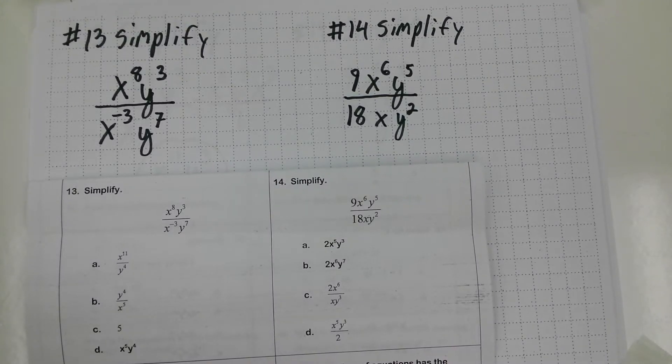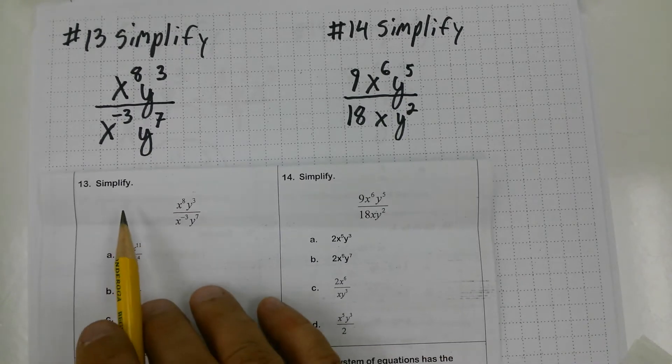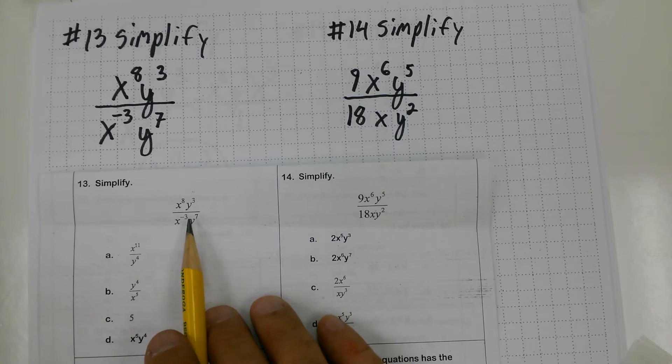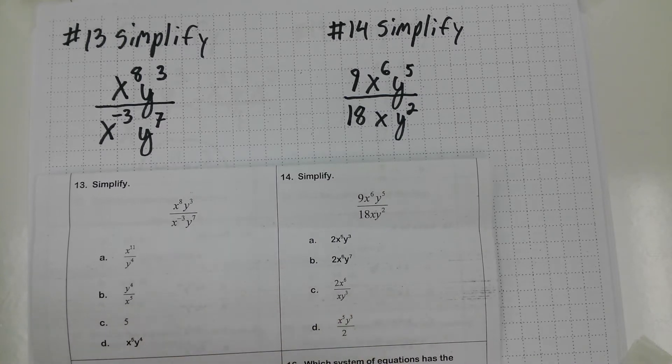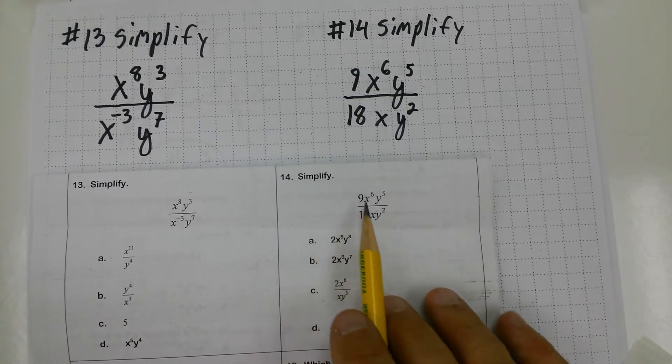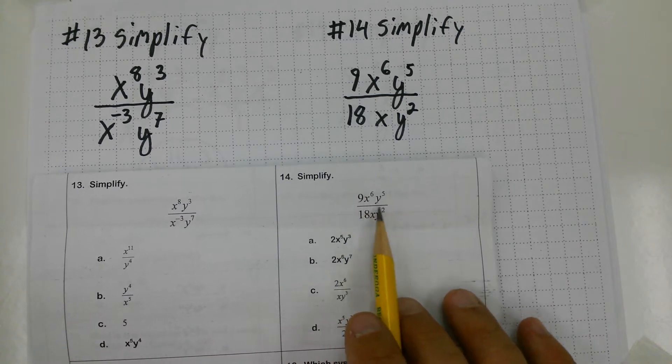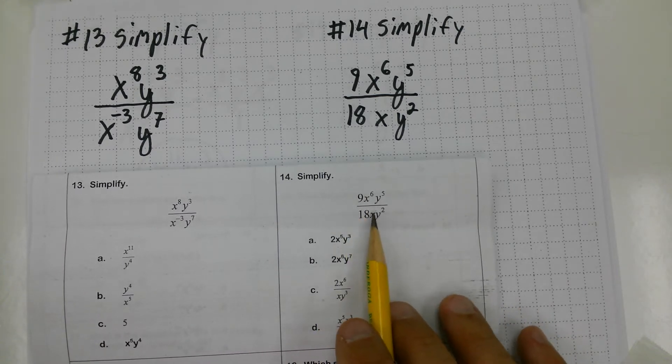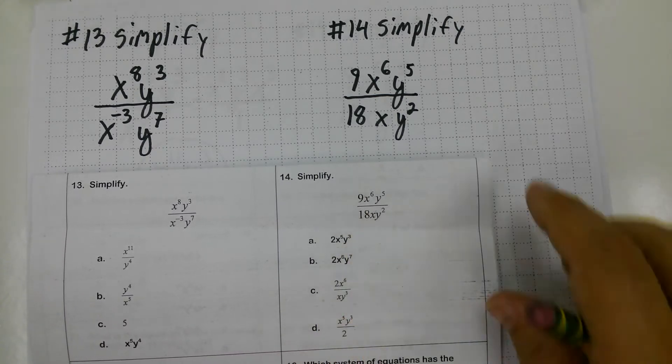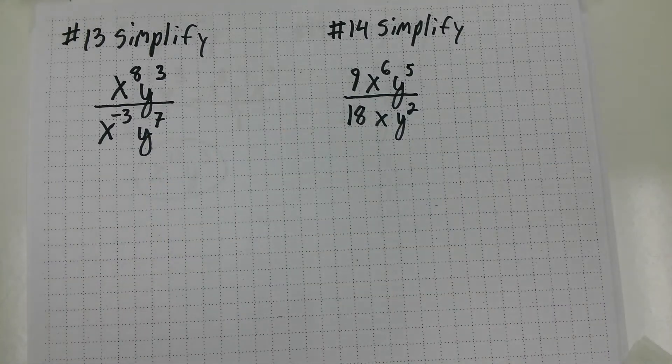Number 13 and number 14 from the PERT practice test, we have two simplify problems. They're asking me to simplify this rational expression. All that means is it's a fraction. It's a fraction with a bunch of letters, variables, and this one has some digits. So let's see what we can do with this.